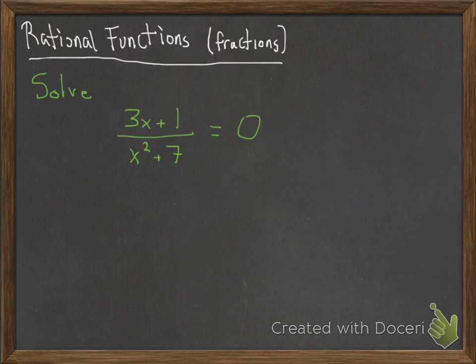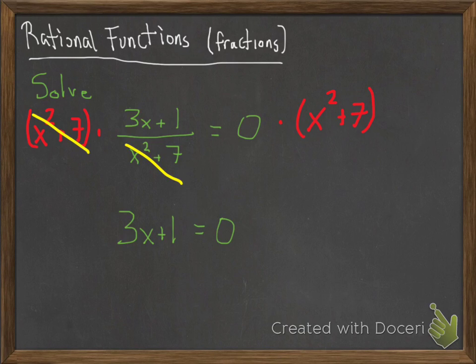We're going to clear the denominators, so multiply both sides by that denominator. Cancels out, that's nice. And then 0 times anything is 0, so it stays 0. So 3x plus 1 equals 0. Notice this is just the top part. The top part equal to 0, you can solve that. x is negative 1 third. Super easy.